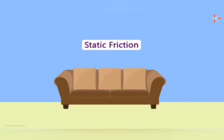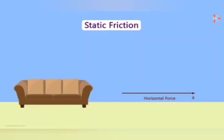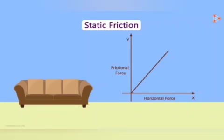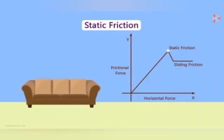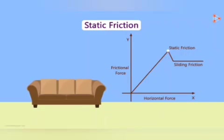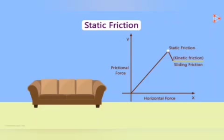We assume the force you apply is the horizontal force represented by the x-axis, and the frictional force applied by the floor is on the y-axis. As you increase the horizontal force, the frictional force increases accordingly to keep the sofa at rest. This continues until the sofa just starts moving — that's where static friction ends and sliding friction begins. The sliding friction is more or less constant. The point around which the sofa just begins to move is called the breakaway point.